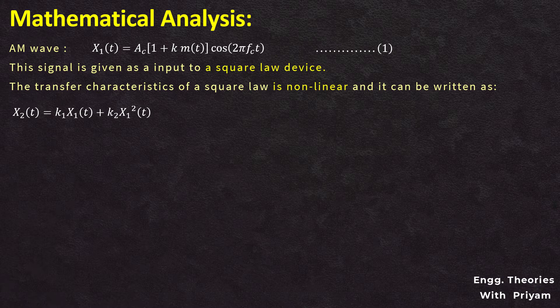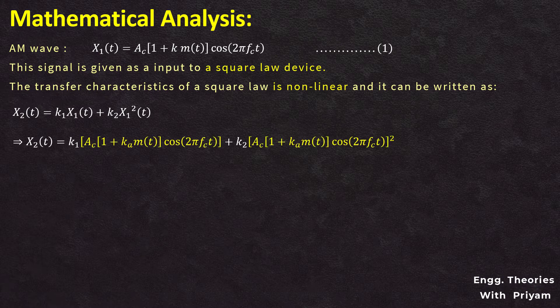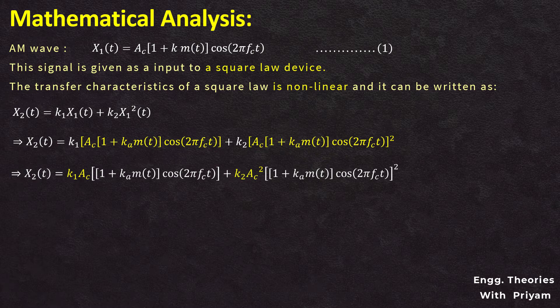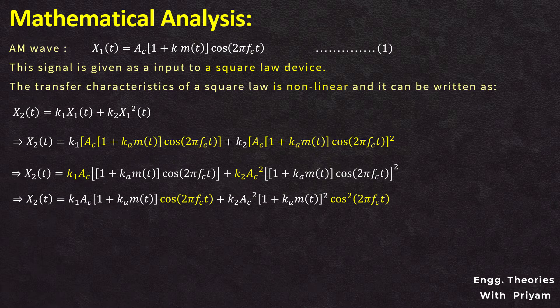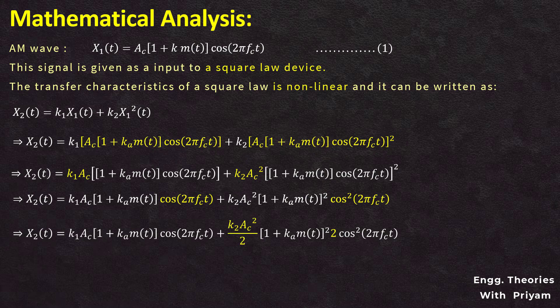Substituting X1(T) = AC × (1 + Ka·m(T)) × cos(2π·fc·T) into the equation for X2(T), we get: X2(T) = K1·AC·(1 + Ka·m(T))·cos(2π·fc·T) + K2·AC²·(1 + Ka·m(T))²·cos²(2π·fc·T). Taking AC common from the first term and AC² from the second term, and dividing and multiplying the second term by 2, the second term becomes K2·AC²/2 × (1 + Ka·m(T))² × 2cos²(2π·fc·T).